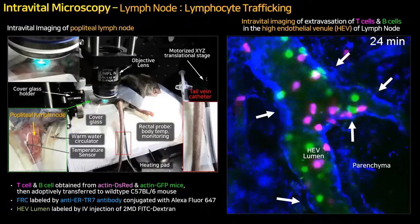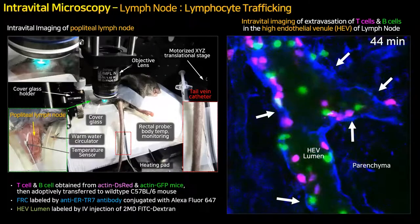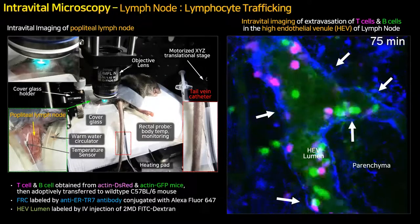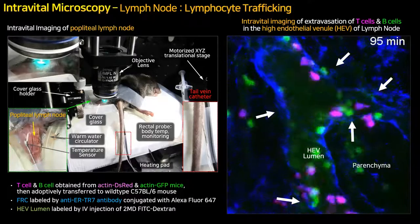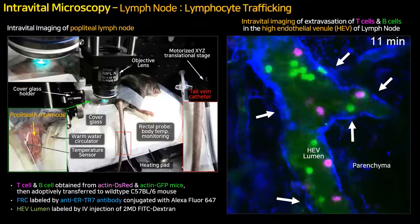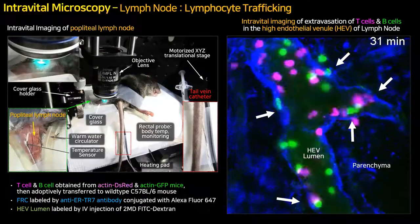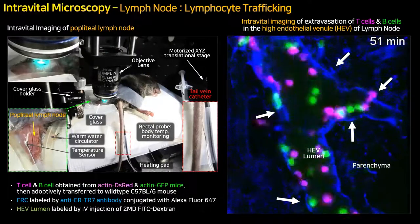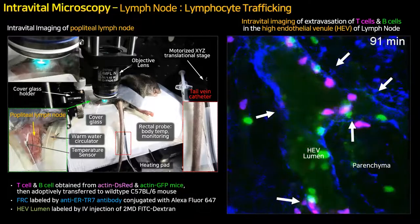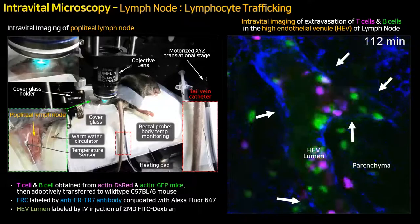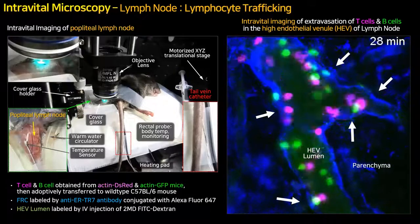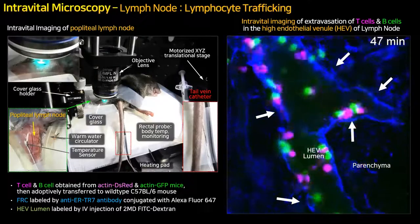Here is one example of in vivo popliteal lymph node imaging. We adoptively transferred T cells and B cells obtained from actin-DS-RED and actin-GFP transgenic mice, and monitored the cellular extravasation dynamics of T and B cells in the high endothelial venule of the lymph node in real-time. T and B cells are selectively extravasated through specific sites of the HEV.